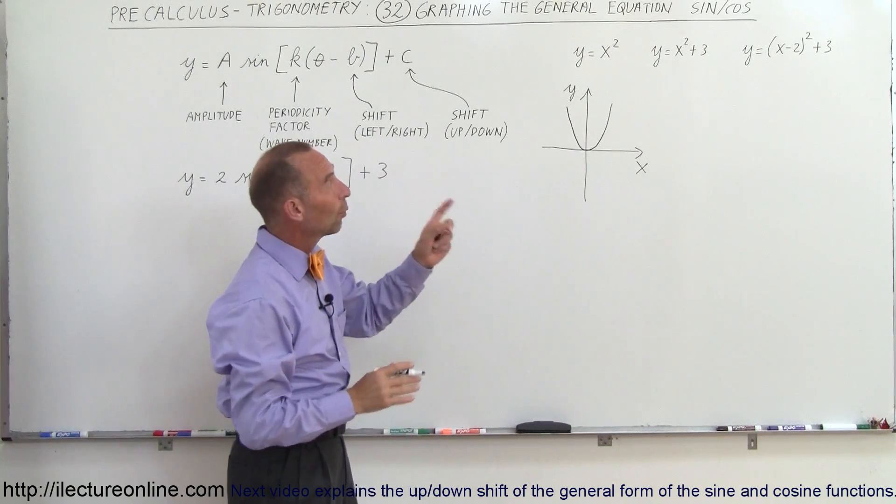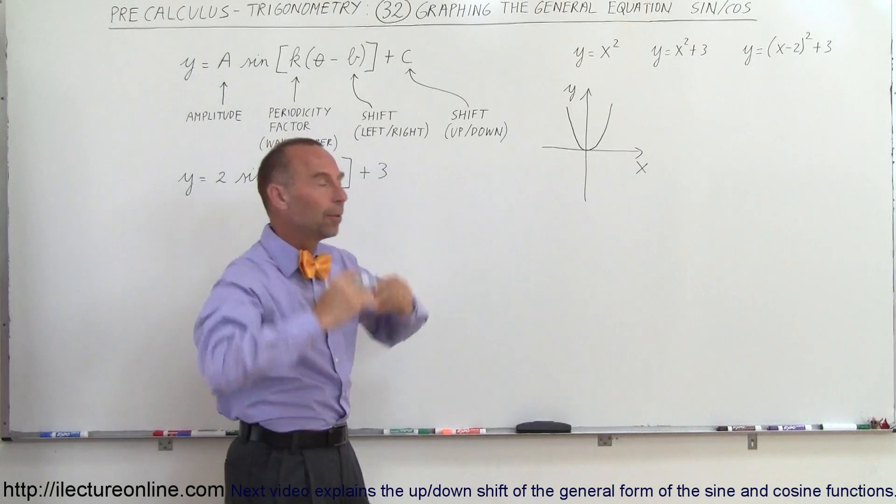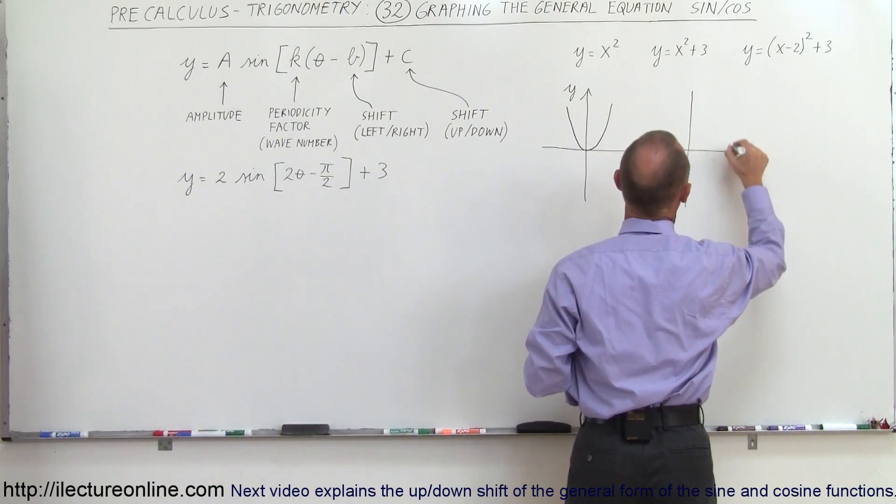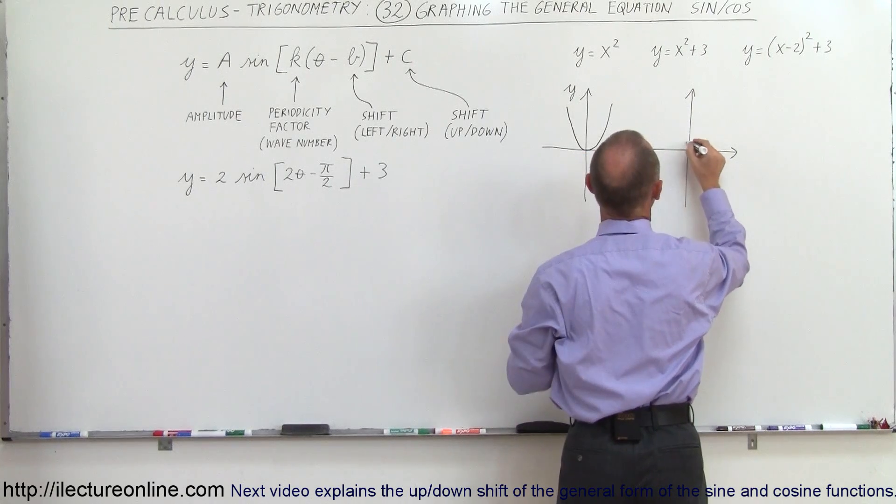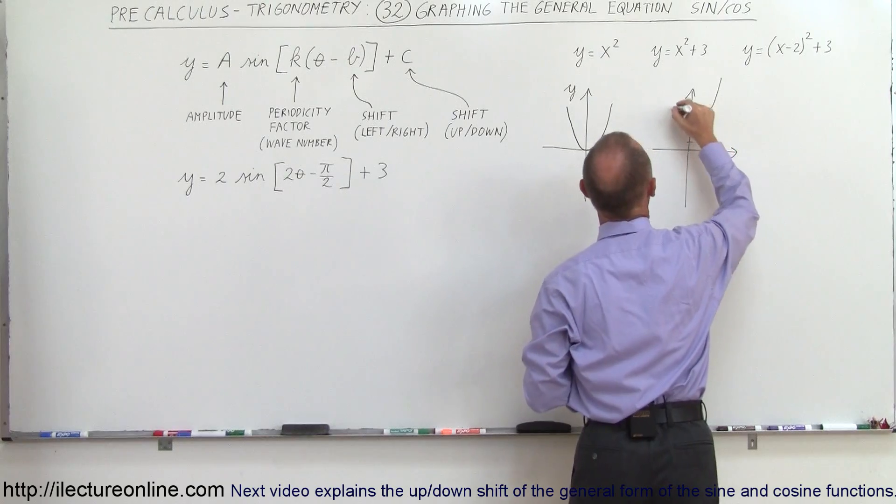Now they say, well what if it was y equals x squared plus 3? You say okay, that shifts everything up three units. So you grab the parabola again but instead of having the vertex at the origin you would now have the vertex three units up and would look something like this.